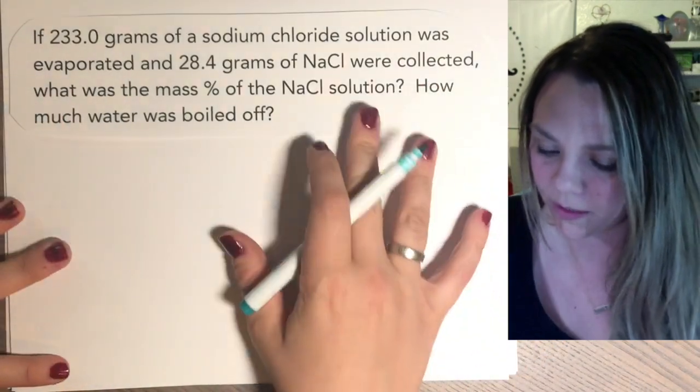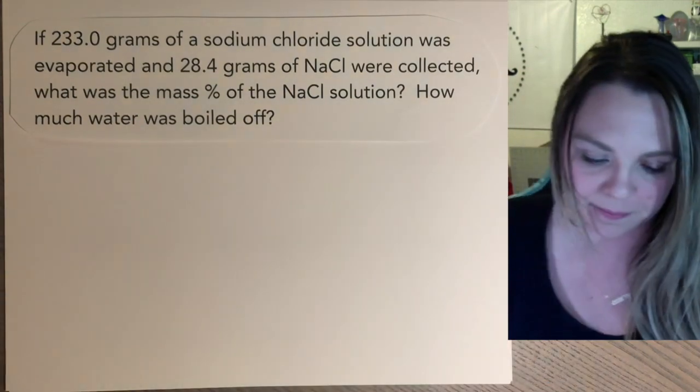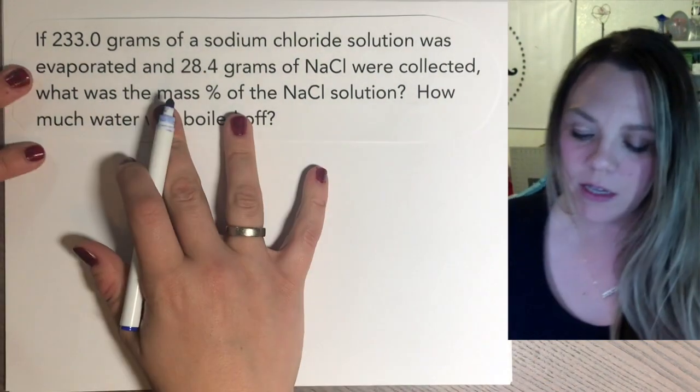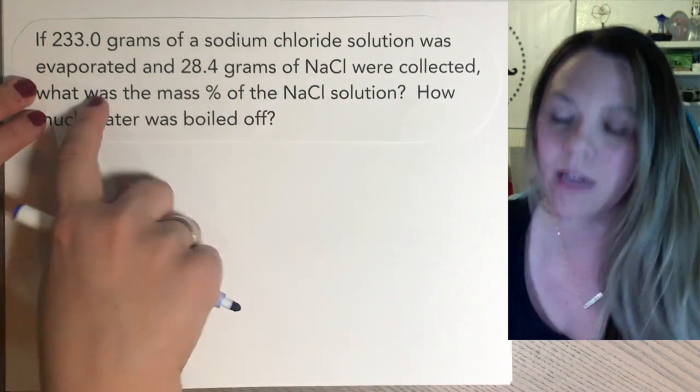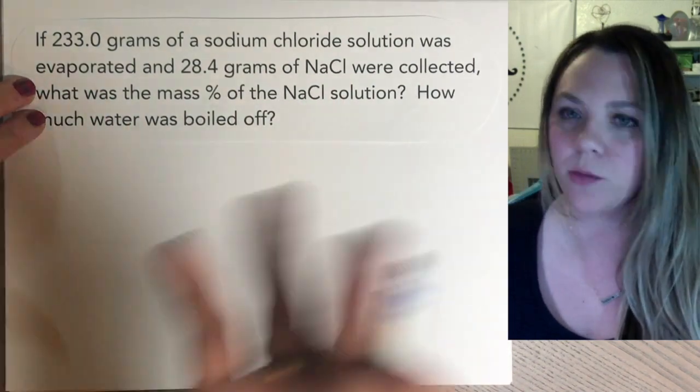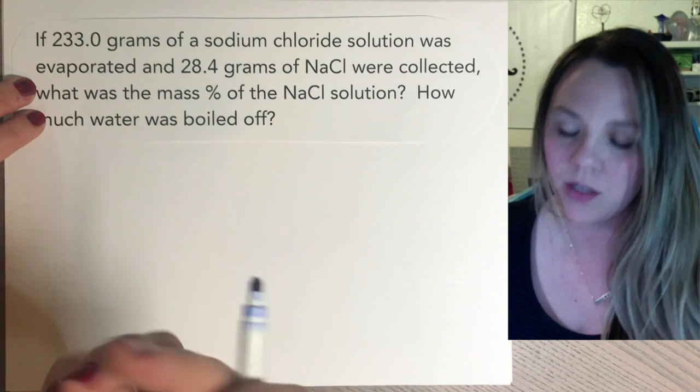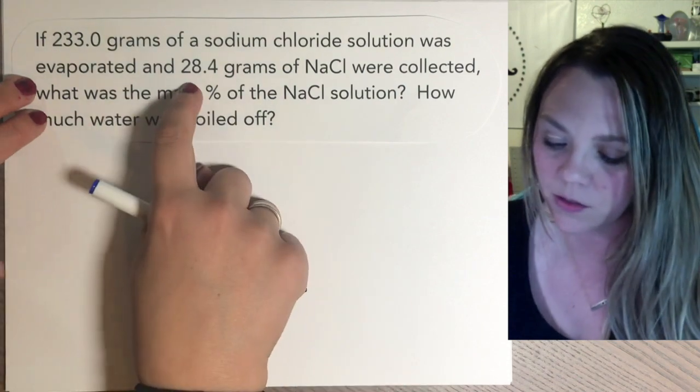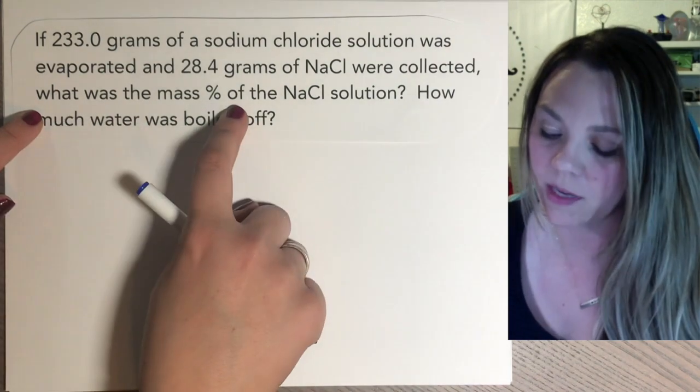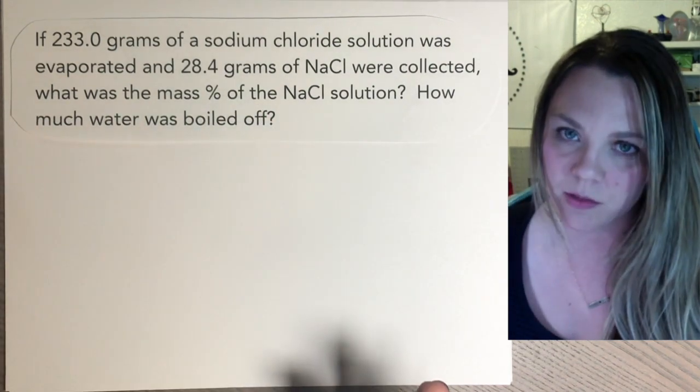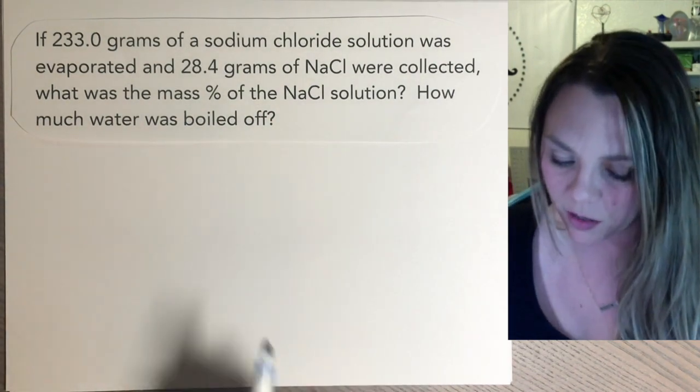Here's example number two. Longer. Ooh, scary. If you have 233 grams of sodium chloride and it was evaporated, so you had a solution, you put it over heat and you evaporated it, you're going to get the salt out at the end. So you get 28.4 grams of the salt collected. What's the mass percent and how much water is boiled off? Not hard at all.